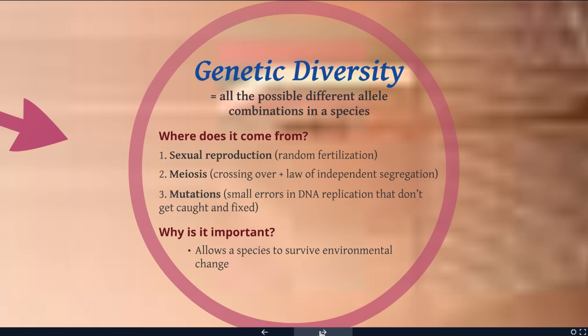Why does it matter? Well, this gets back to when we talked about evolution. This is what's going to allow a species to survive environmental change. If you have variety in your population, then you have certain individuals that may be able to survive if it gets too cold or too hot, or if there's a flu epidemic or something like that. So genetic diversity is key to the long-term survival of species. And now you have a better understanding at the molecular and genetic level of where all that genetic diversity comes from.